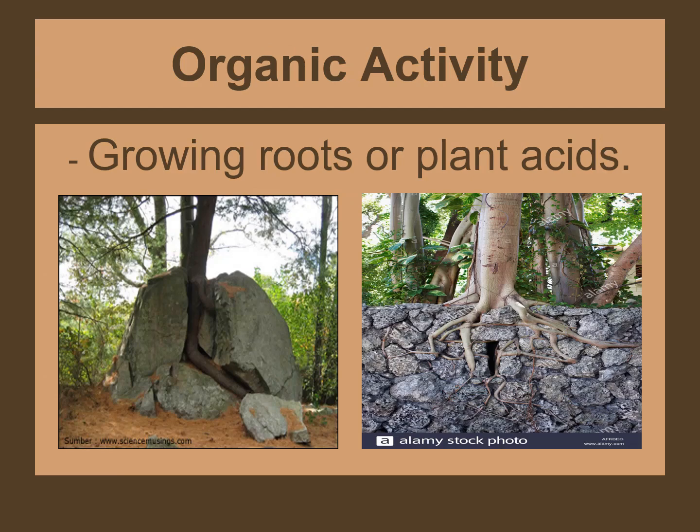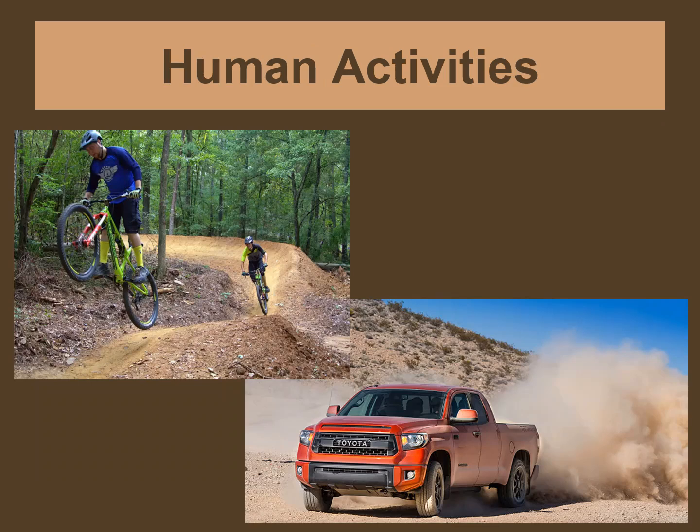Another type of physical weathering is organic weathering or organic activity. This happens when plants break rocks with their growing roots, or when plant acids help dissolve rock. Once the rock has been weakened and broken up by weathering, it is ready for erosion.